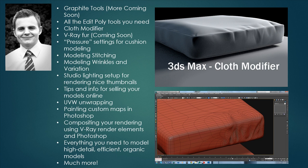This course will teach you all the edit poly tools you need for making nice furniture models. We'll go over the cloth modifier for adding variation and wrinkles. We'll briefly cover V-Ray fur. I'll show you how to use the pressure setting to make cushions and model organic pieces of furniture with nice wrinkles that look very realistic. I'll show you how to model stitching, modeling wrinkles and variation into your furniture, studio lighting setup for rendering nice thumbnails, tips and info for selling your models online at places like TurboSquid, UVW unwrapping, painting custom maps in Photoshop, and compositing your rendering using V-Ray render elements and Photoshop.